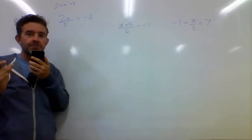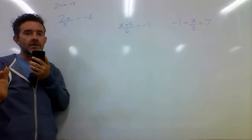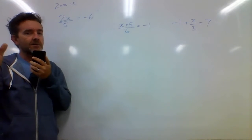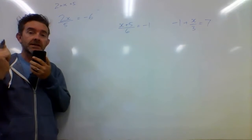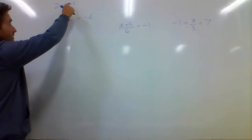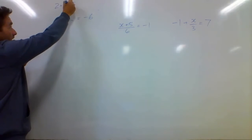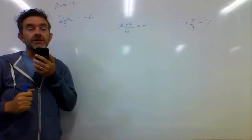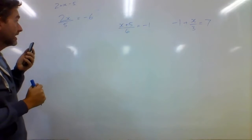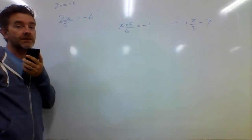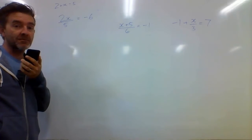In BODMAS you do brackets, order — the division and multiplication happen at the same time but you do them from left to right. So the last thing that is happening there is a division. So I need to get rid of that 5 that's being divided by doing the inverse operation — I need to multiply by 5.